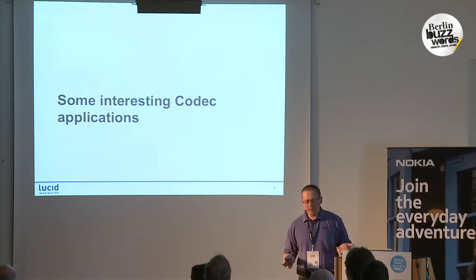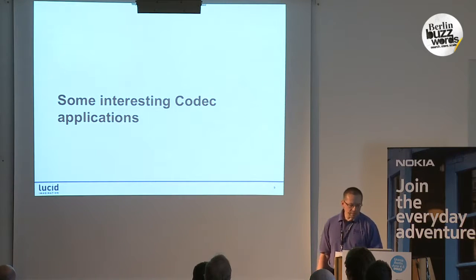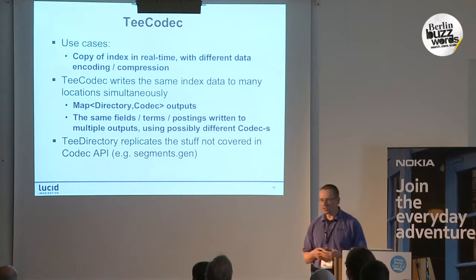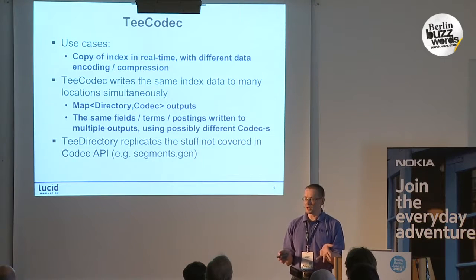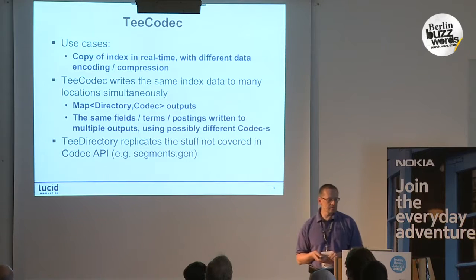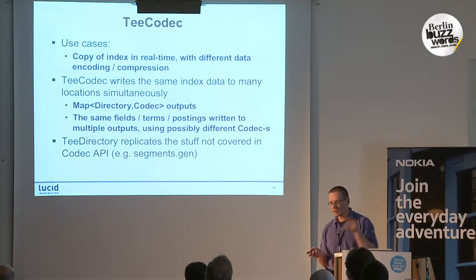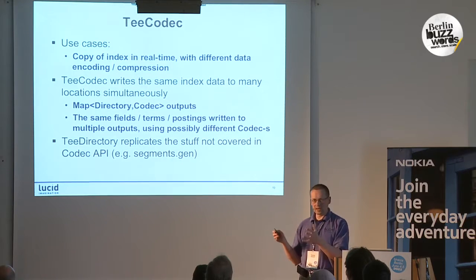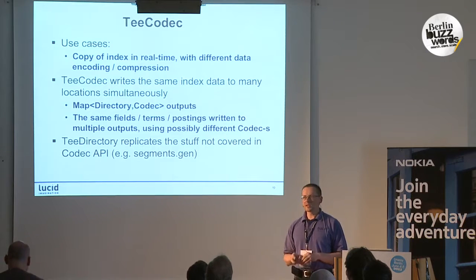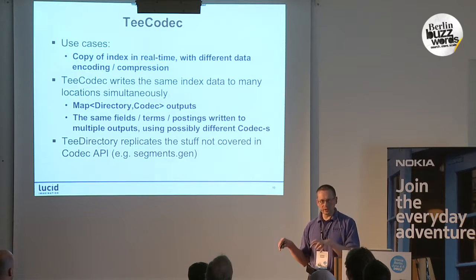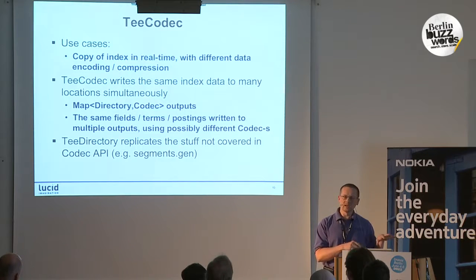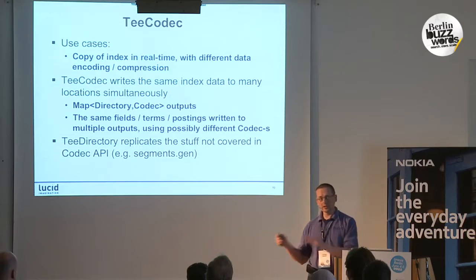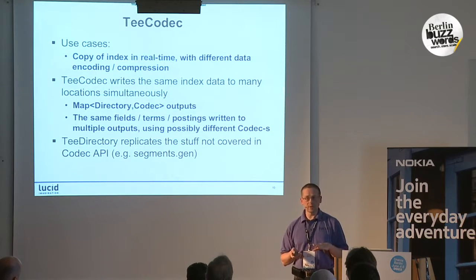With the introduction of this API, Lucene became a very attractive platform for information retrieval research and experimentation. There are some other interesting applications of the codec API that became suddenly possible. For example, the T-codec: the idea is simple — you write your data not to a single destination but to multiple destinations in parallel. The T-codec writes the same data to a destination defined as a combination of a directory and another codec. This means you can customize the layout and encoding of your data depending on the storage — for example, a different encoding on HDFS and a different encoding on relational database storage.